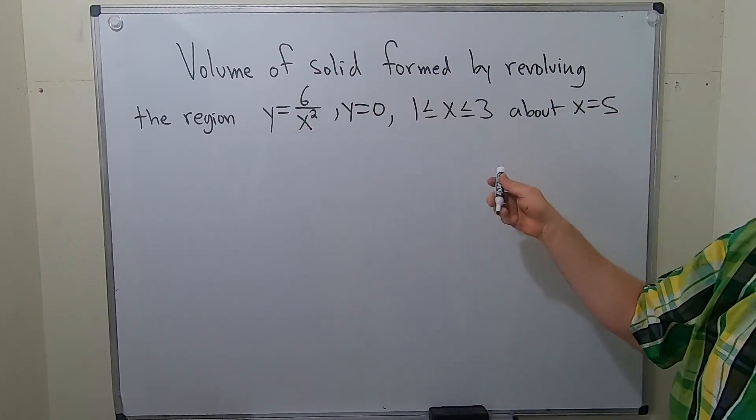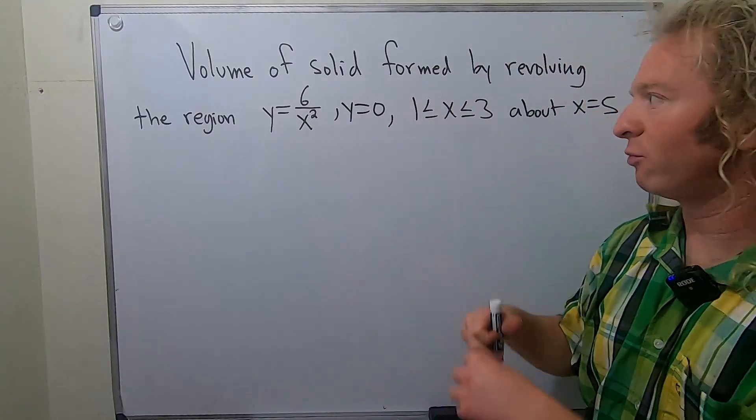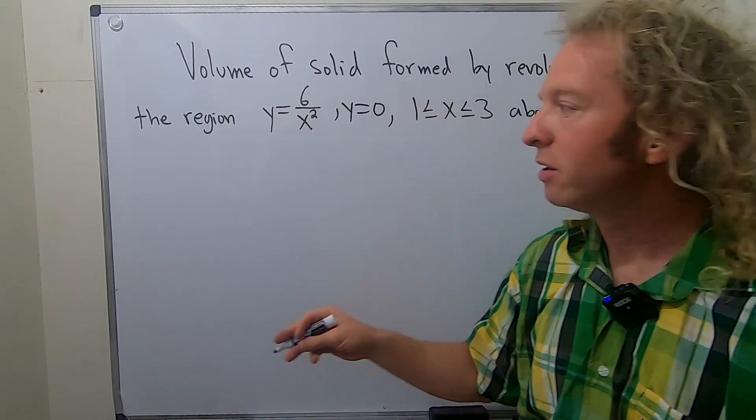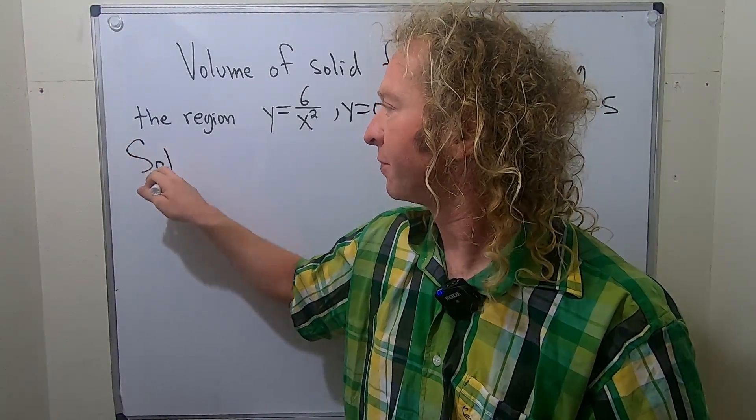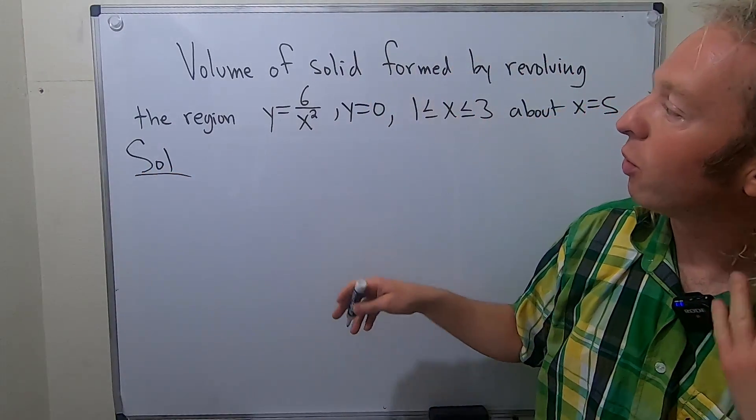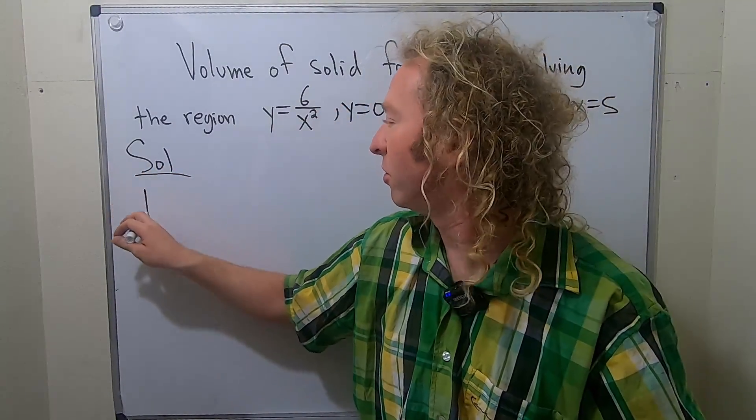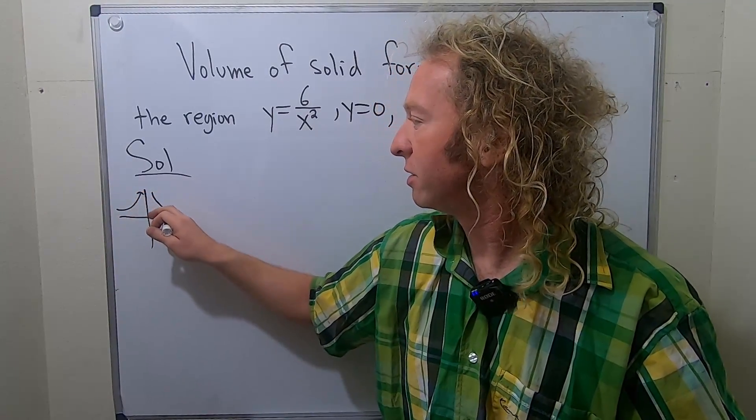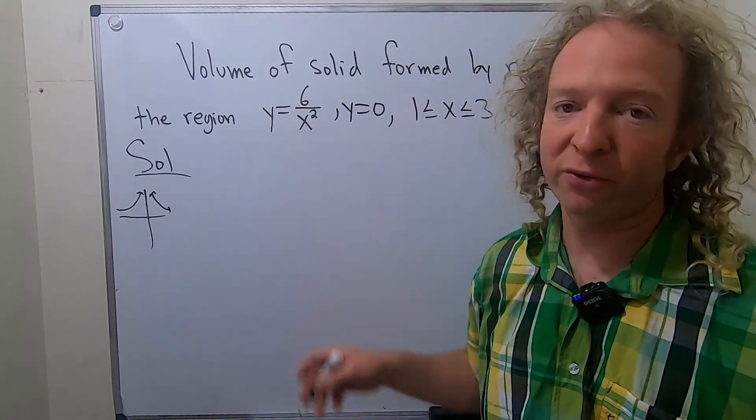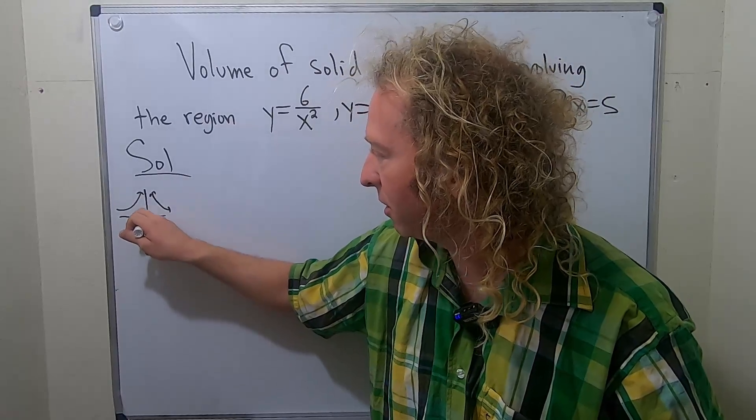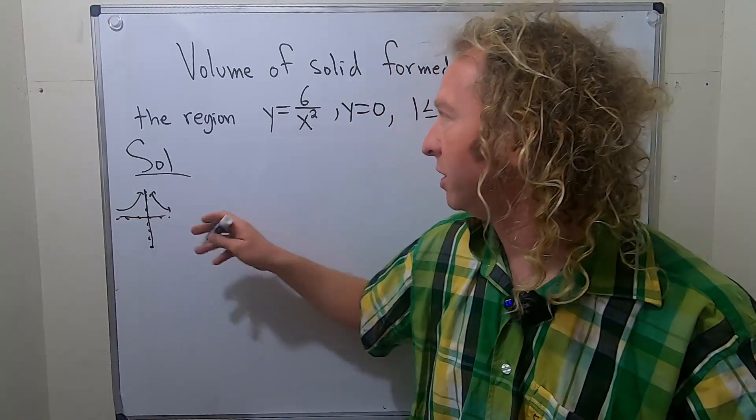Okay, so the first step in this problem is to draw a rough sketch of the region. Let's go ahead and attempt to do that. Solution. So y equals 6 over x squared. I have this memorized. I know that it looks something like this. This is y equals 6 over x squared. It's got a vertical asymptote here and it has a horizontal one here.